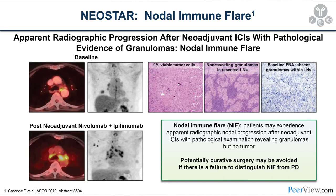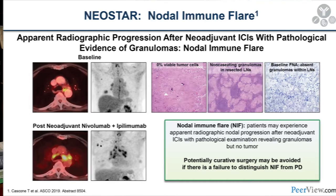The concept of nodal immune flare is important. NEOSTAR investigators — one arm with nivolumab, one arm with nivolumab plus ipilimumab — saw patients develop lymph nodes with granulomas that were PET-avid and looked like progressive disease but were not. This emphasizes that if you see PET-positive disease after treatment, you must confirm it pathologically. We've seen this in our own trial at Cornell — even lung lesions that looked like progression turned out to be granulomas.